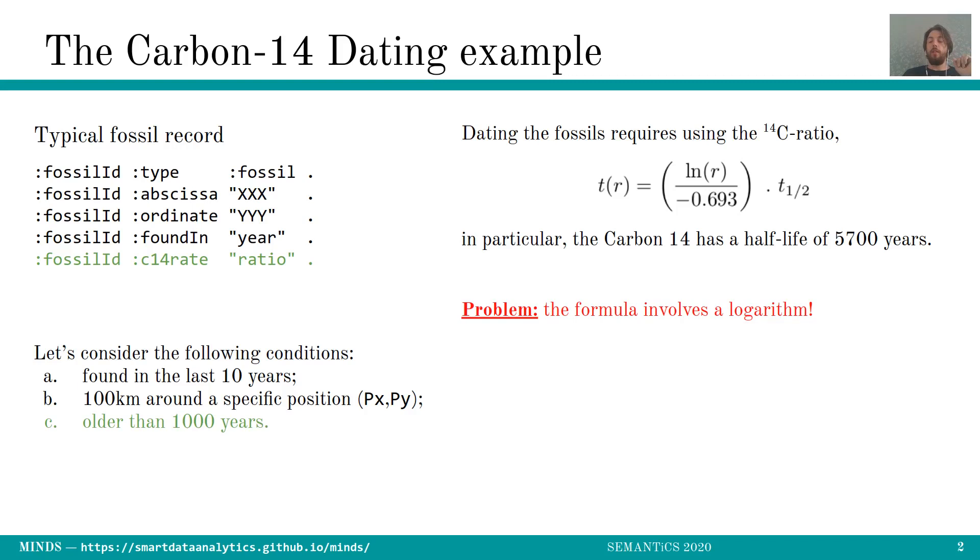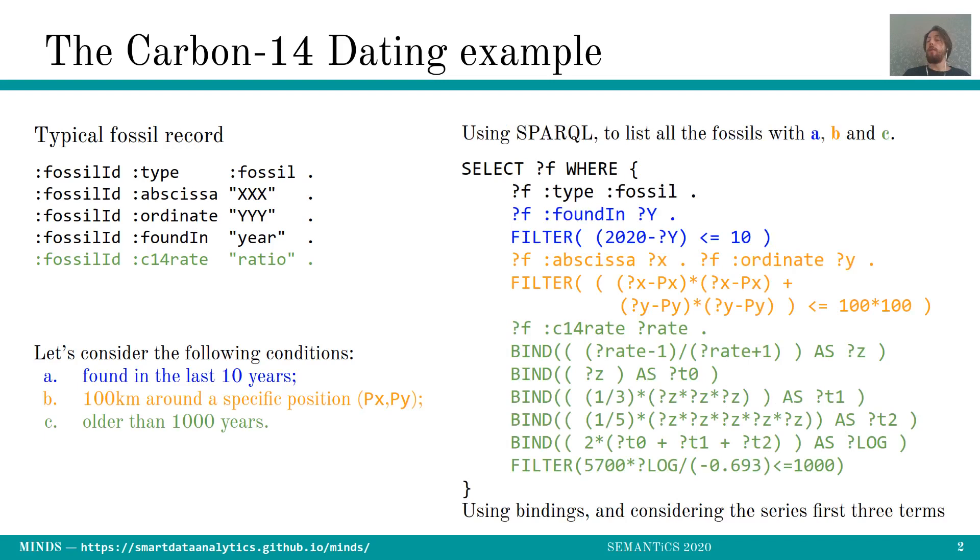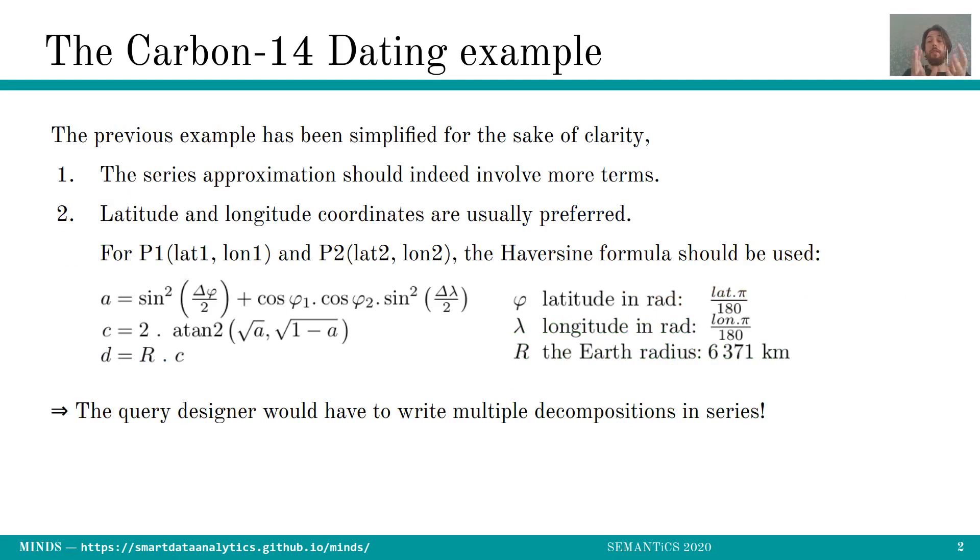So one way of doing this, still being compliant with the standard functions plus minus times and divide, would be to use the decomposition in series of the logarithms which the formula is represented here. And if we only consider the first three terms and write some bindings we could approximate that and it would look like so in the following SPARQL queries. So you can see now that we have to use lots of bindings which are prone to error only considering the first three terms. And obviously I've been simplistic in my example, very simplified for the sake of clarity.